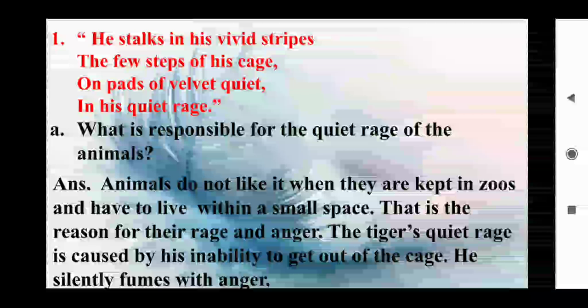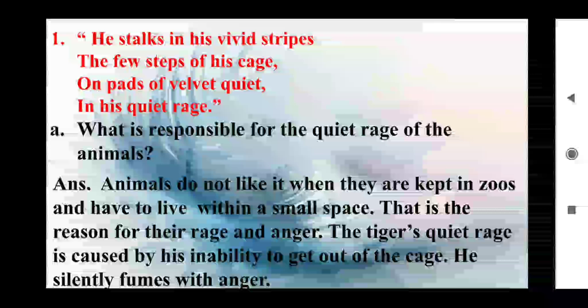Extract: 'He stalks in his vivid stripes the few steps of his cage, on paths of velvet quiet, in his quiet rage.' Question (a): What is responsible for the quiet rage of the animals? Answer: Animals do not like it when they are kept in zoos and have to live within a small space. That is the reason for their rage and anger. The tiger's quiet rage is caused by his inability to get out of the cage.